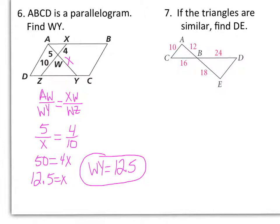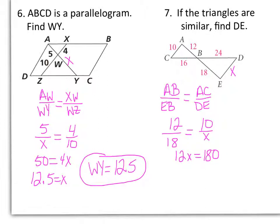Number 7. If the triangles are similar, find DE. We want to find DE. Again, I'm just going to call it X. We can say AB is to EB as AC is to DE. So 12 is to 18, 10 is to X. So 12X equals 180. Divide by 12. X equals 15. So that means DE is 15.